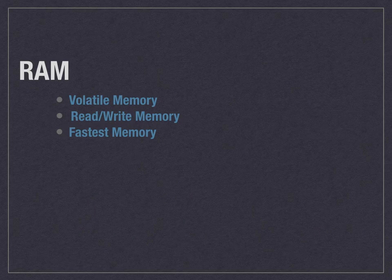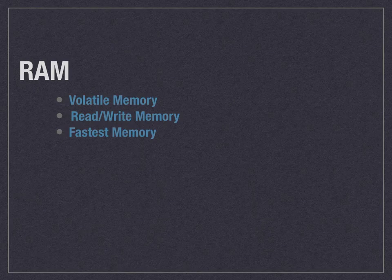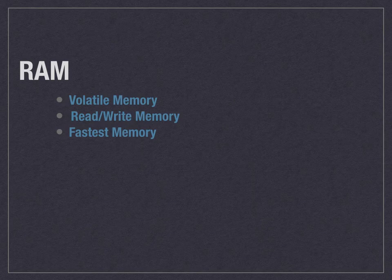Now we'll move to the second type of primary memory — RAM, which stands for random access memory. It is also called short-term memory. It is a volatile memory, meaning whatever data is stored inside RAM will be removed once the electricity is shut off. The RAM contains the data currently being processed, and all processing in your computer happens in RAM. In RAM you can both read and write data, and it is considered the fastest memory in your computer.